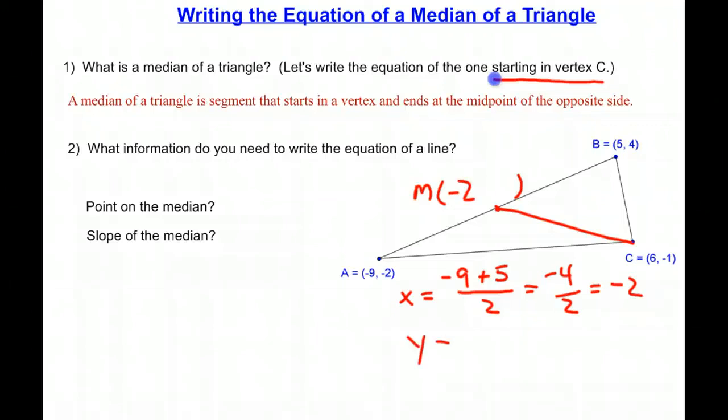The y-coordinate of the midpoint is found by averaging the y's of the endpoints. So negative 2 plus 4 divided by 2, which is the same thing as 2 over 2, which is equal to 1. So we have now the coordinates of our midpoint and that will help us in finding the slope.